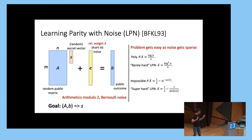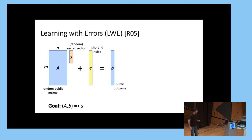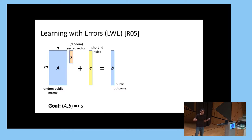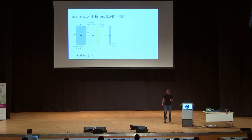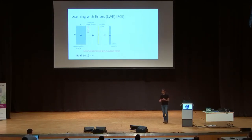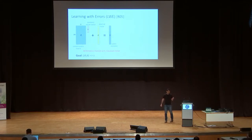So that sets up LPN — when it's easy and when it's hard — and we'll think about these two parameter regimes later. But now let me talk about a related problem: the learning with errors problem. As you can see, the syntax of the problem is almost identical — we want to solve a set of random linear equations with some additional IID noise. However, the difference is that the system is not over the binary field; it's over a modulus Q which is large and asymptotically large.